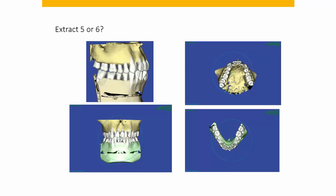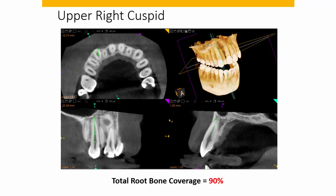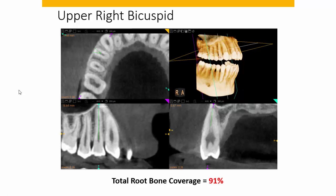If you extract the upper right first bicuspid, you need to distalize the upper cuspid into the class one position. If you extract the upper cuspid, the upper first bicuspid really doesn't need to be moved that much. One thing we look at using cone beam CT is the amount of bone surrounding the root — how much of the circumference is covered with bone, measured from the CEJ to the apex. This gentleman's upper right cuspid has about 90% total root bone coverage, and the upper right first bicuspid has about 91%.